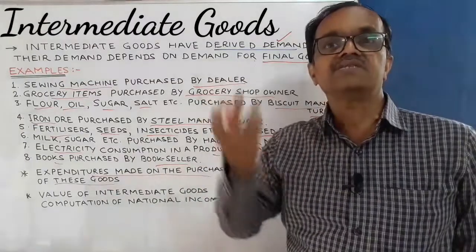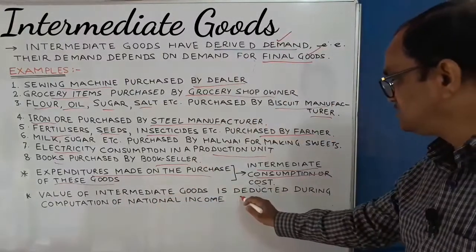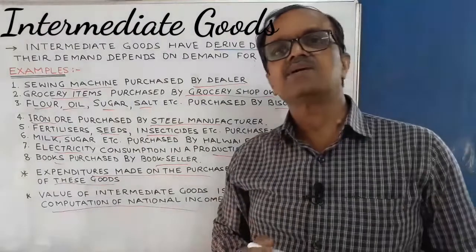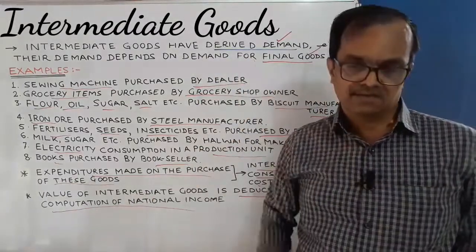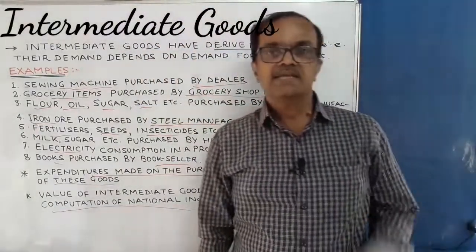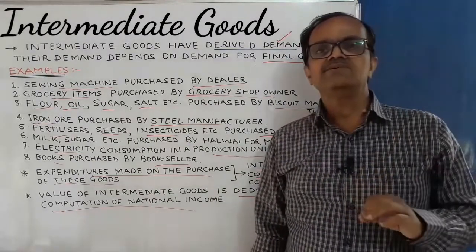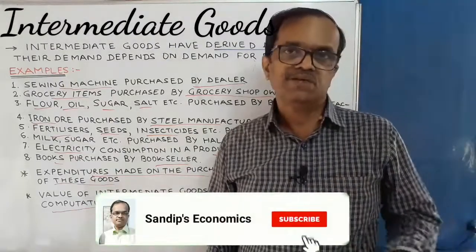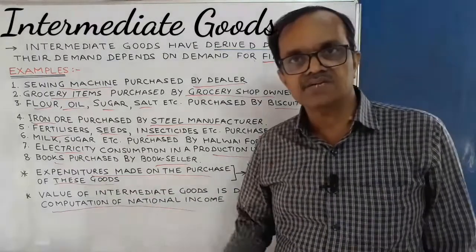What is the significance of intermediate goods in national income accounting? The value of these goods is deducted during the computation of national income. When we calculate national income, the value of intermediate goods is not added but deducted. That is all about the meaning of the term intermediate goods and its significance in national income accounting. We will meet in the next video. Till then, keep watching my videos and subscribe to my channel for more such videos. Thank you very much for watching.